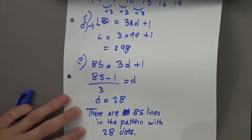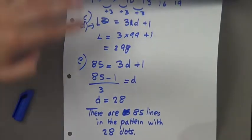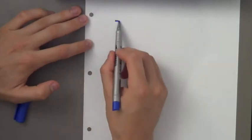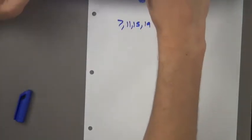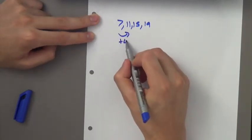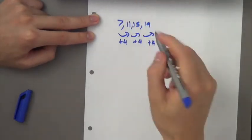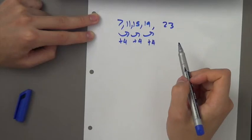Now moving to the second set of questions: look at the sequence of numbers 7, 11, 15, and 19. Write down the next number in the sequence. We're plussing 4 each time — plus 4, plus 4. So 19 plus 4 is 23. That's the answer for part A.